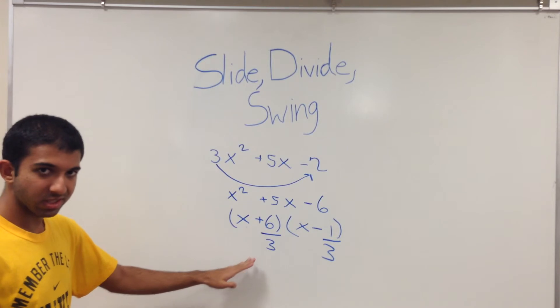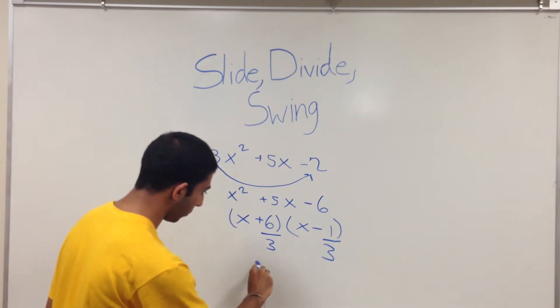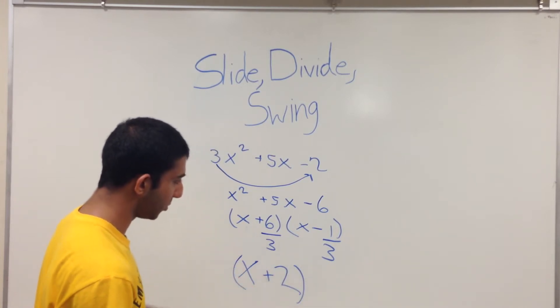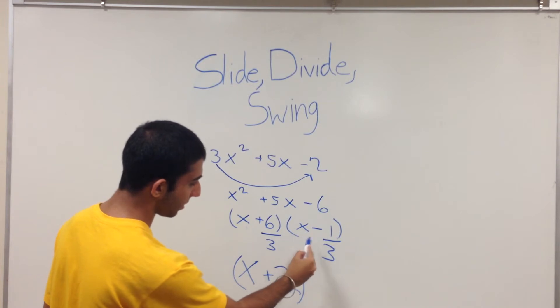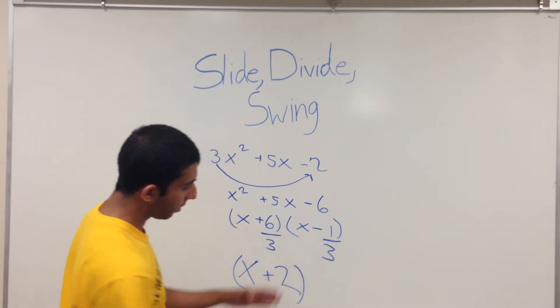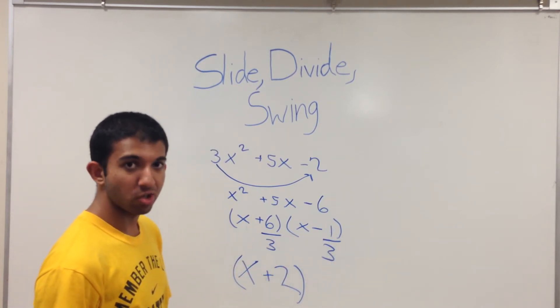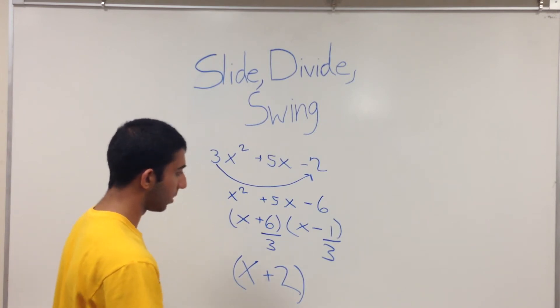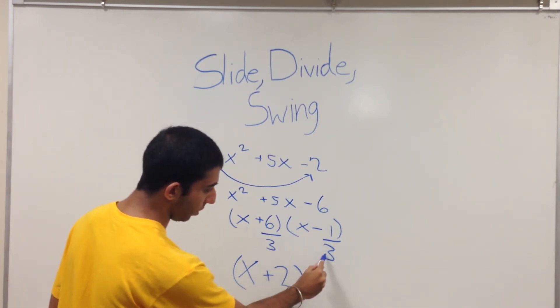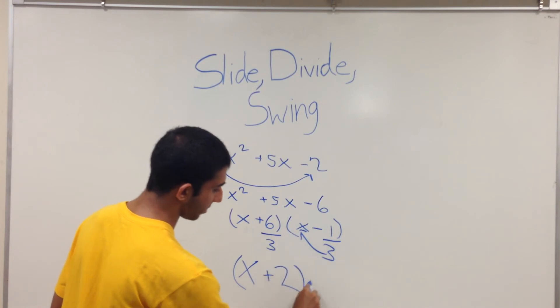6 is divisible by 3, so you will have x plus 2, because 6 divided by 3 is 2. x minus 1 over 3, but 1 divided by 3 is not an integer. So you will take the 3 and you will swing it up next to the x.